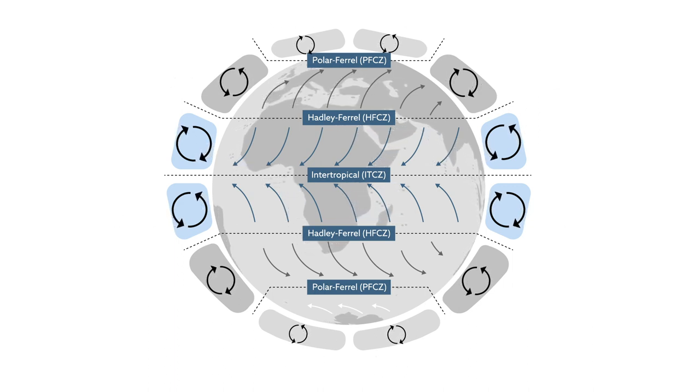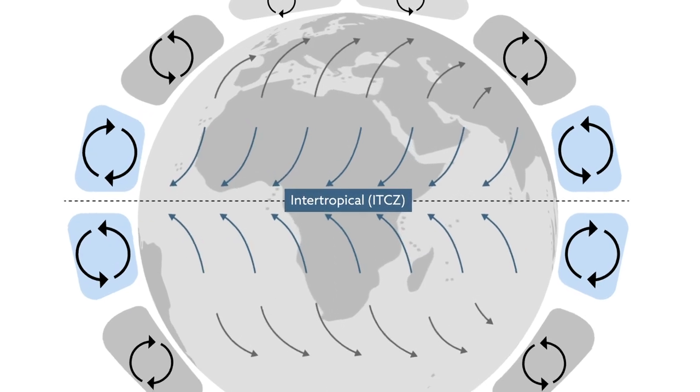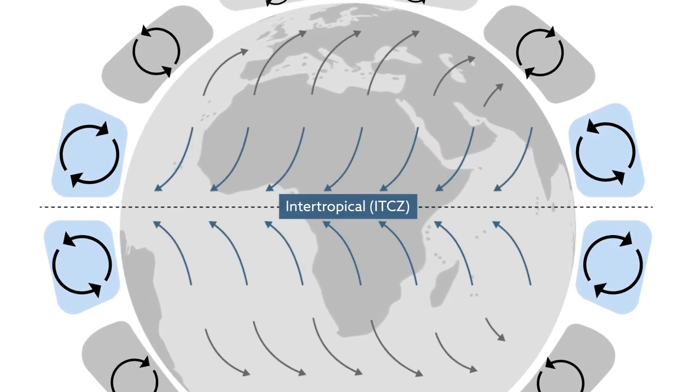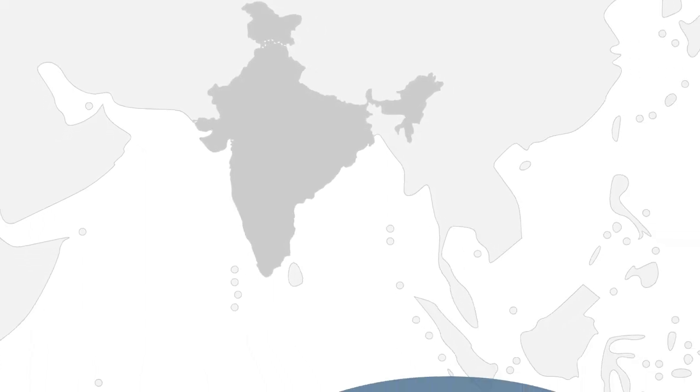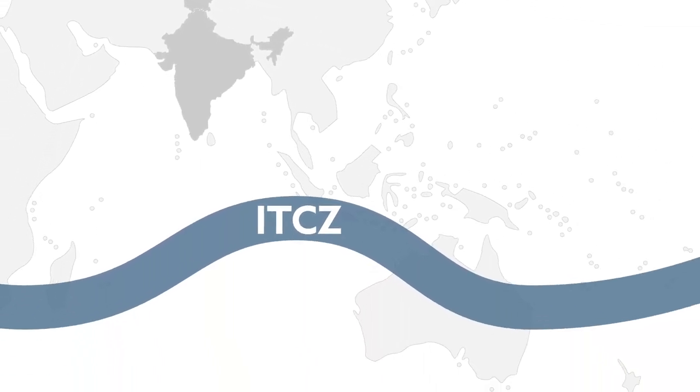Monsoons—seasonal shifts in wind that trigger heavy rain—happen at the Intertropical Convergent Zone, or ITCZ. Monsoons are seasonal because the Earth's tilt affects the ITCZ's location.